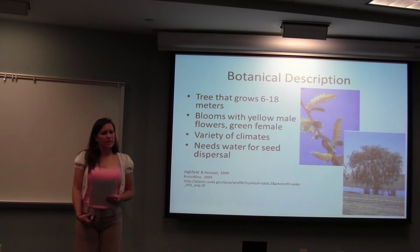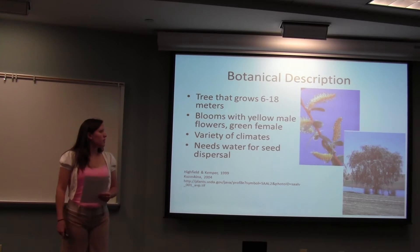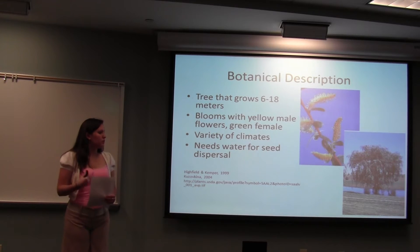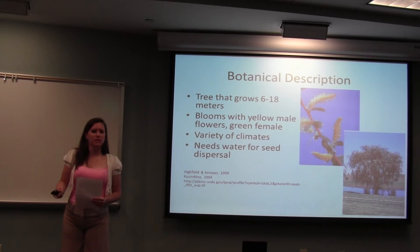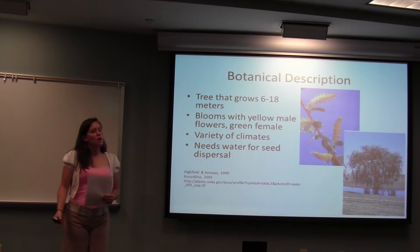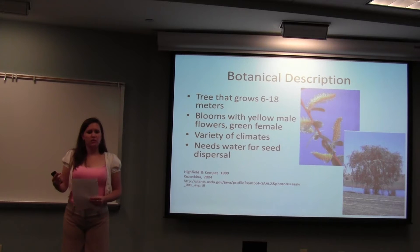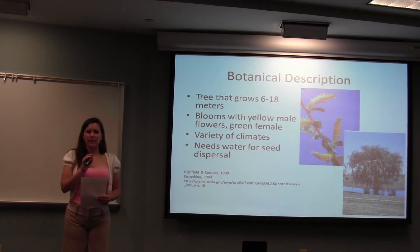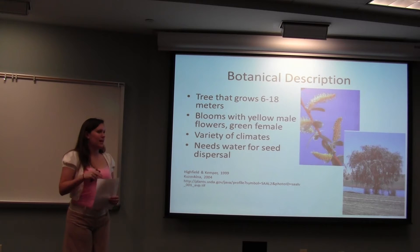It grows 6 to 18 meters and its flowers are yellow and green. There's a picture of the seeds on the side. Its normal habitat varies, but usually it's near water because the seeds need water for dispersal. Once the seeds have been implanted in the ground, they don't need water constantly to survive — it's just the dispersal part. The seeds travel pretty far because they're really lightweight and have hairy structures on them, so they can attach and move great distances.